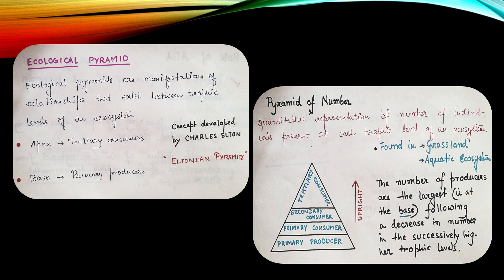The first pyramid that we will be considering here in the discussion is pyramid of number. Quantitative representation of number of individuals present at each trophic levels of an ecosystem is given by the pyramid of number. Where do we get to see this? We get to see this normally in grassland ecosystem and in aquatic ecosystem.